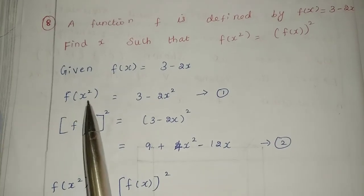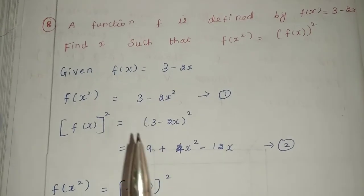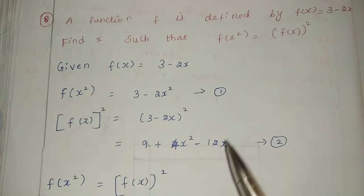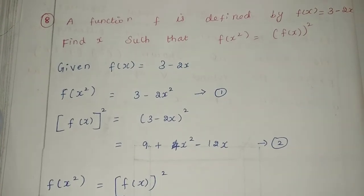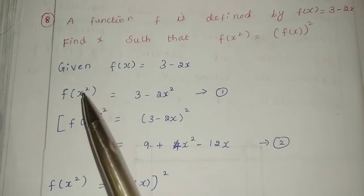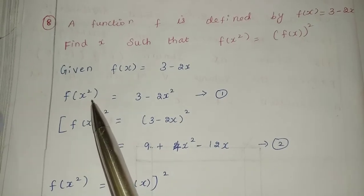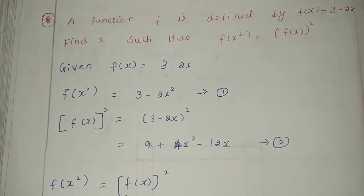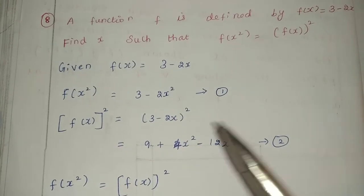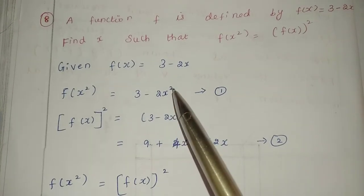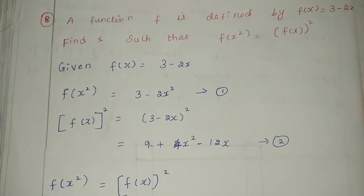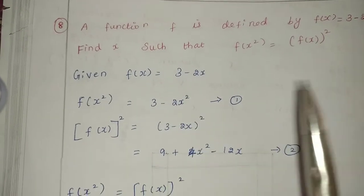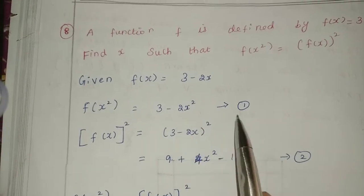First, we will find f of x squared. We substitute x squared into the equation: f of x squared equals 3 minus 2x squared. This is the first equation.